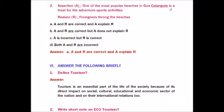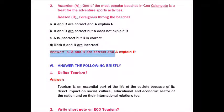Question number two: Assertion: One of the most popular beaches in Goa, Calangute, is a treat for adventure sports activities. Reason: Foreigners throng the beaches. The answer is: A and R are correct and A explains R.